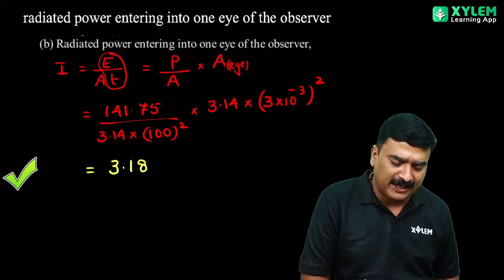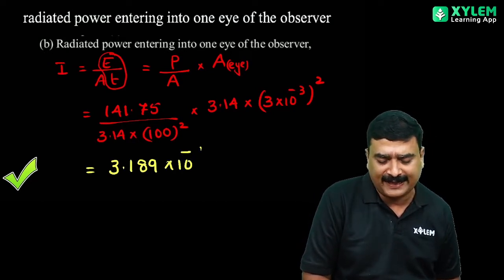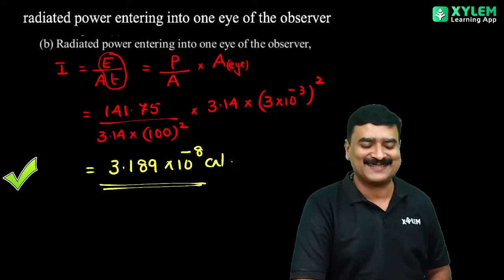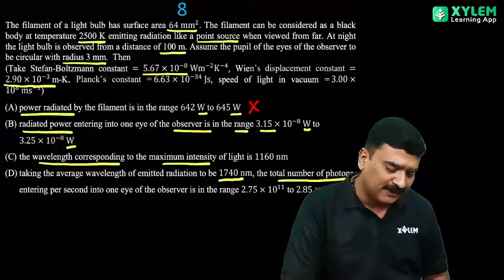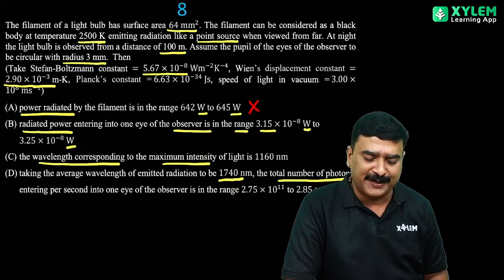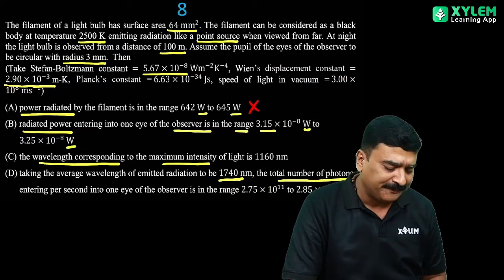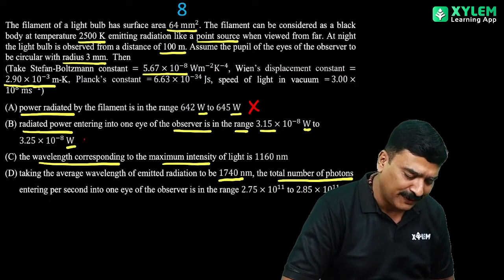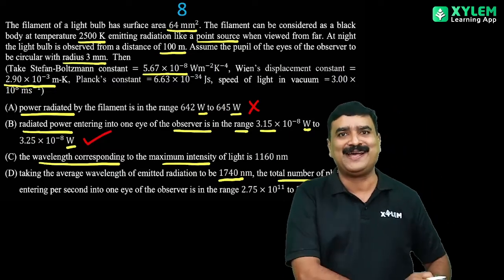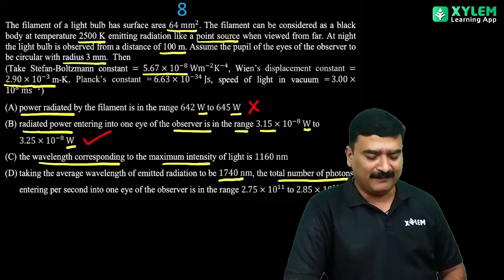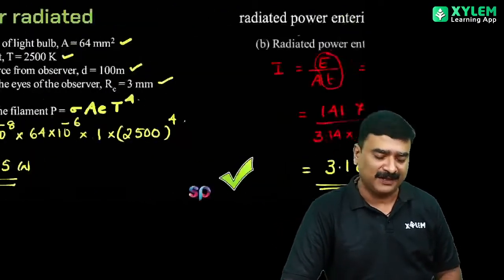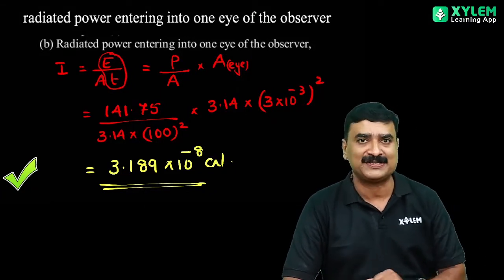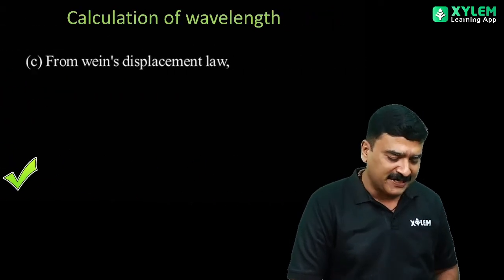The result is 3.189 × 10^-8 watts. Option B - the range should be 3.15 to 3.25 × 10^-8. We got 3.189, so option B is correct.